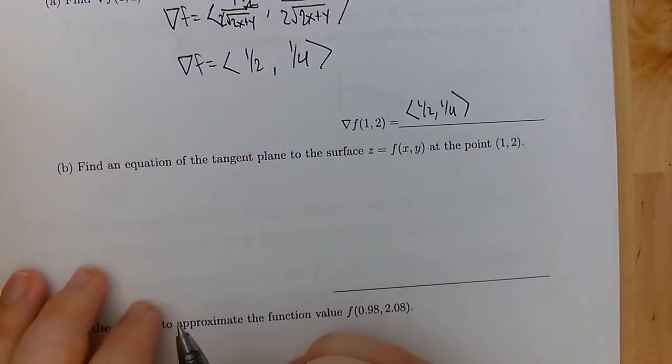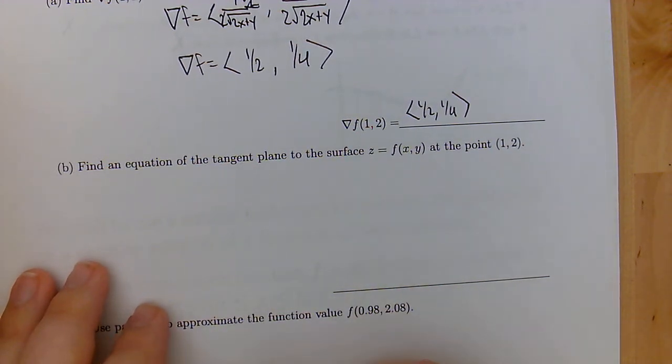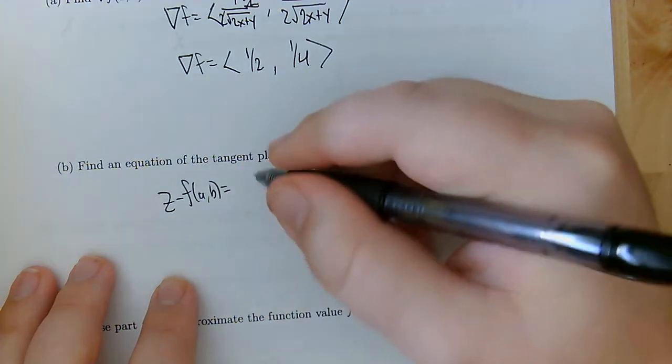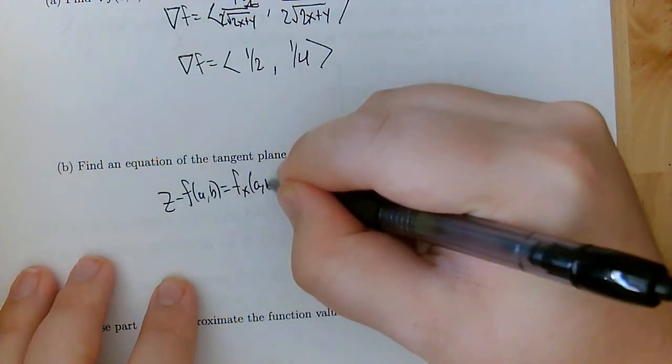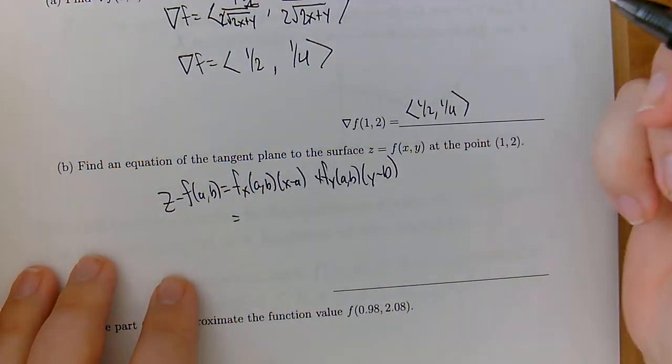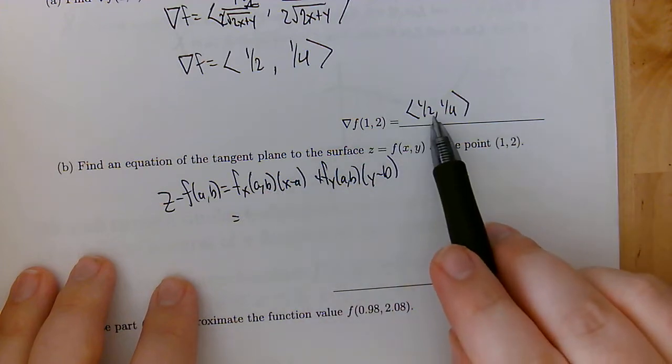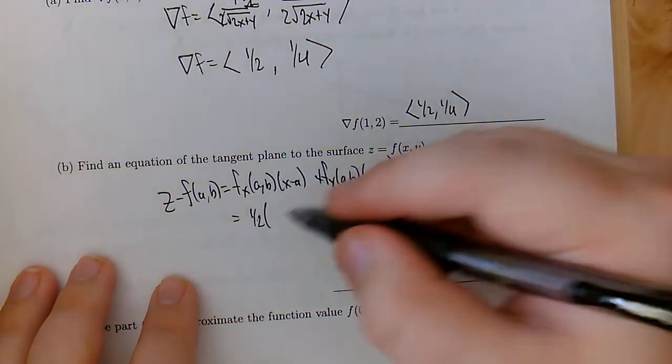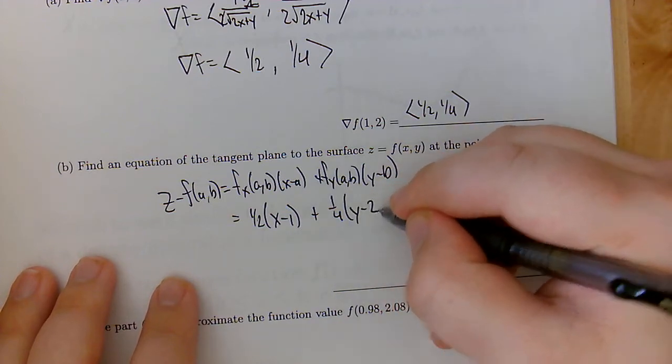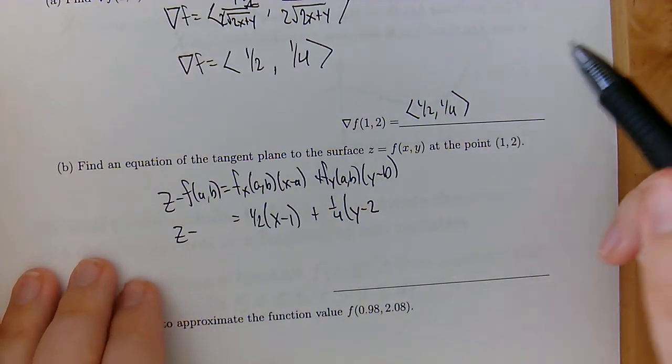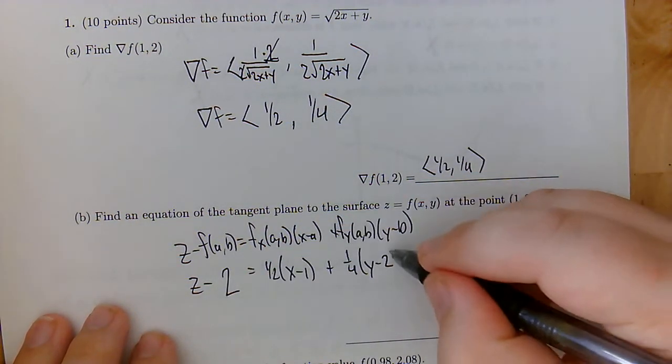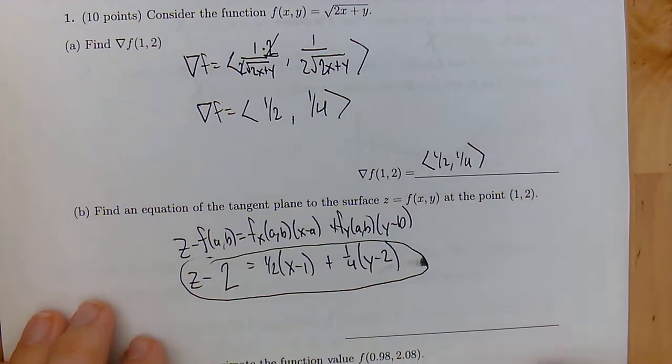All right. Next, find an equation of the tangent plane to the surface z equals f(x,y) at the point (1,2). Well, we actually already have most of the information for that. The tangent plane equation is z minus f(a,b) is partial f partial x at (a,b) times (x minus a), plus the y derivative at (a,b) times (y minus b). So the x derivative at (a,b), well, that's our x component of our gradient will be 1/2. And then we do (x minus 1). And then the y component here will be 1/4. And then we have (y minus 2). And then over here, we have z minus f(a,b). Well, what's f(a,b) equal to? If we plug 1 here and 2 here, we're going to end up getting 2 for that. So this is going to be the equation of our tangent plane right there.